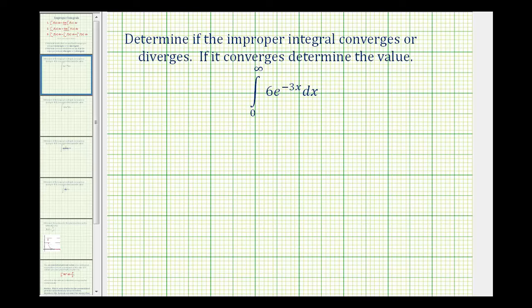We want to determine if the improper integral converges or diverges, and if it converges, we want to determine the value. This is an improper integral because the upper limit of integration is infinity.